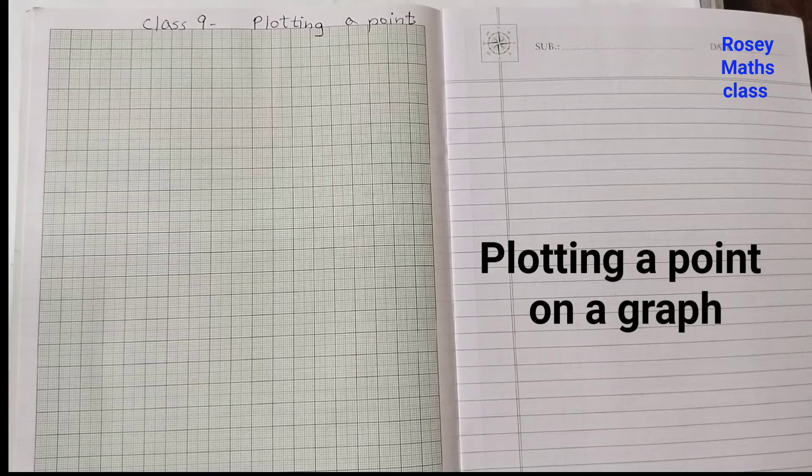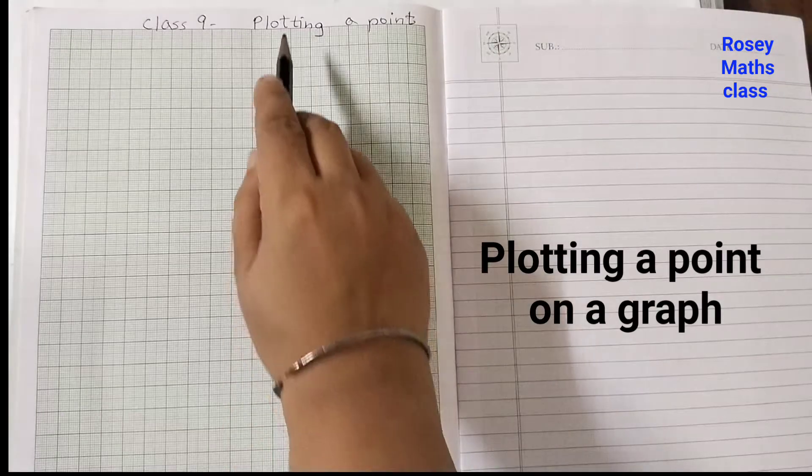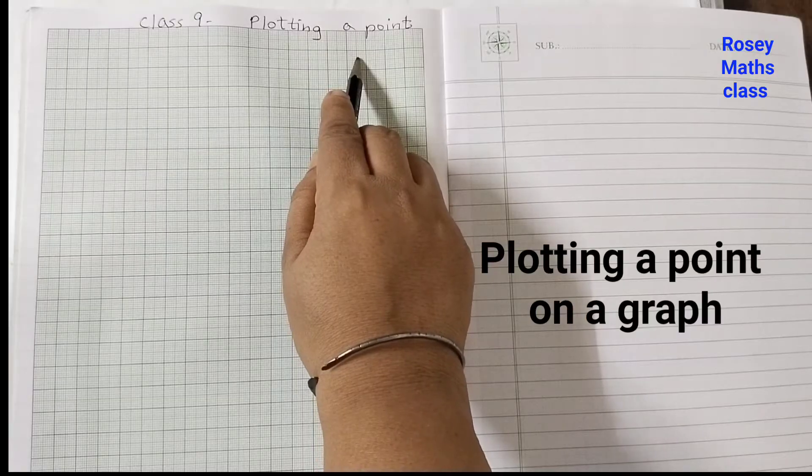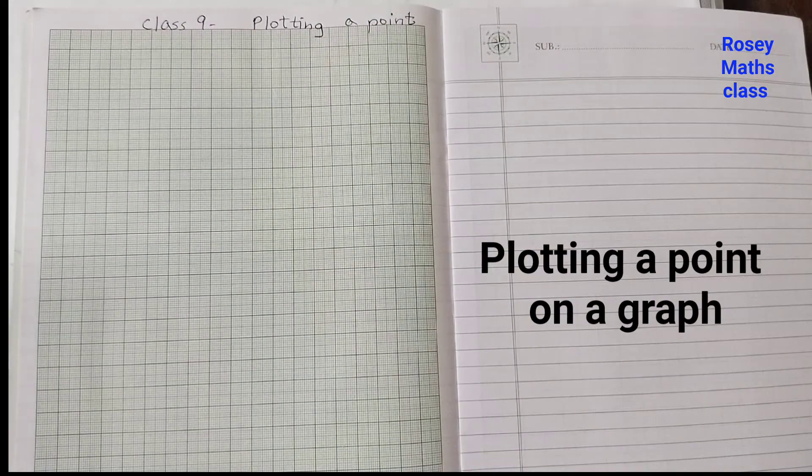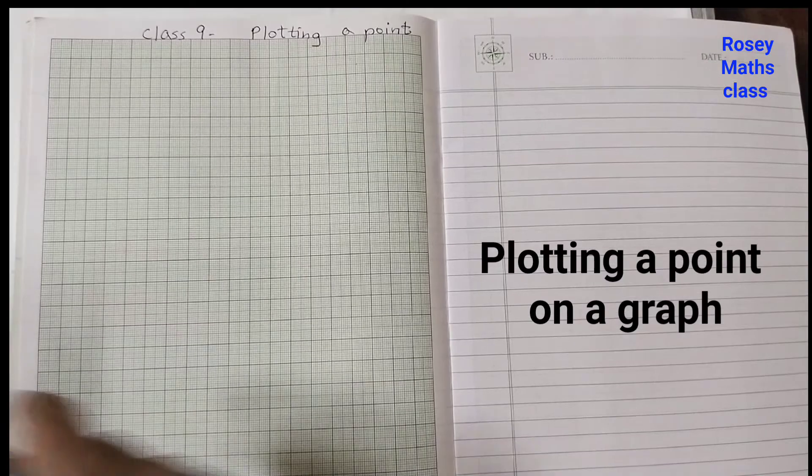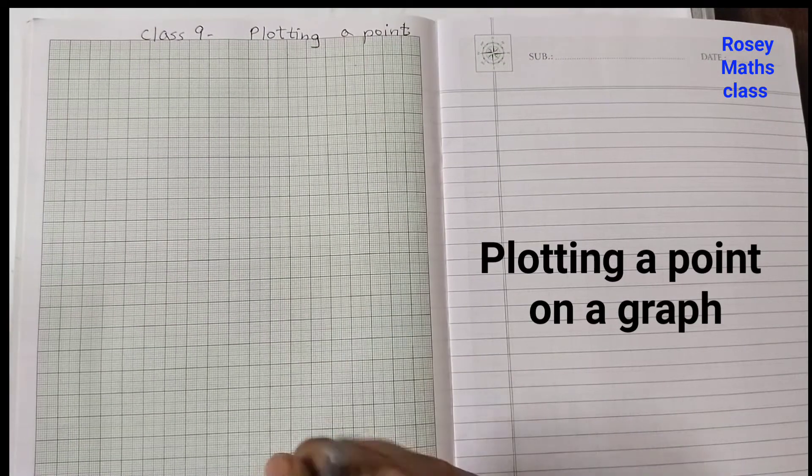Hello students, in today's video we shall learn how to plot a point. In chapter 3 coordinate geometry you need to plot points, so I'll show you how to plot a point easily. This is called graph paper where you have these dark colored lines and light colored lines. This is used for graphing.